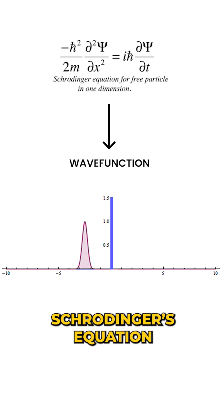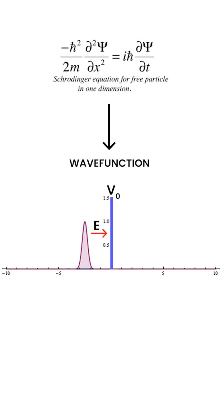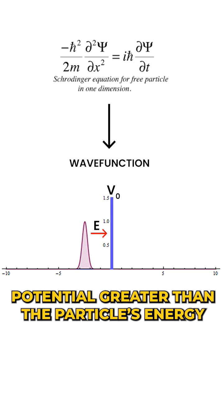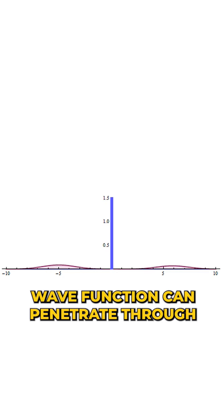You see, quantum particles are best described by their wave functions, which are the solutions to Schrödinger's equation. When such a particle approaches a barrier with potential greater than the particle's energy, there is a probability that the wave function can penetrate through.